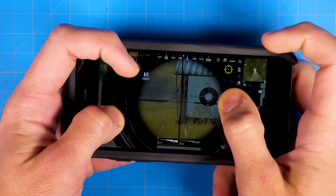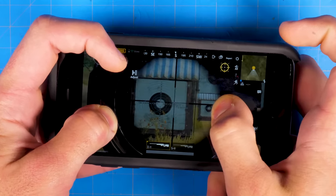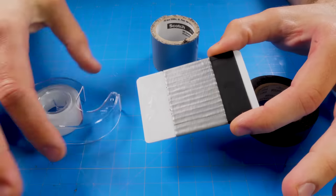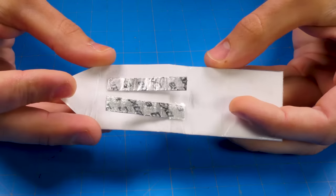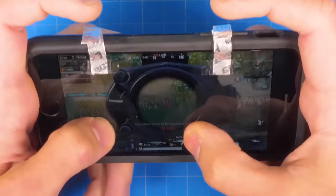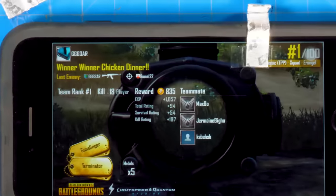You've probably experienced the frustration of using touchscreen controls. Using just a gum wrapper and some tape, I'll show you how to make trigger buttons so you can dominate the competition. Check out some gameplay footage at the end of the video.